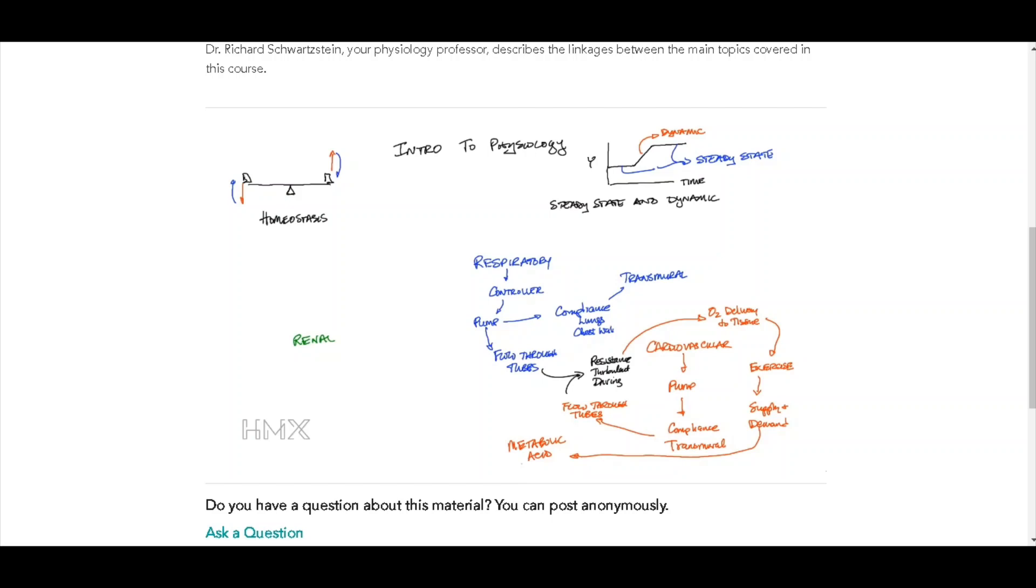On the respiratory side, the ventilatory pump again has flow through tubes. In this case, they go to alveoli, the gas exchanger unit. And so we now have to consider issues about gas exchange.